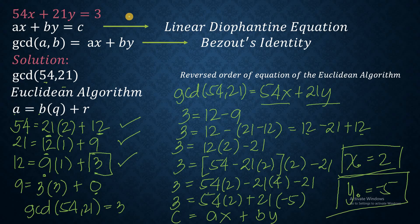So if you treat this as a linear Diophantine equation, and you look for the GCD of a and b, which is 54 and 21, applying Euclidean algorithm to arrive at that GCD, and then utilizing the Bezout's identity, reversing the order of equation of the Euclidean algorithm, then you now have the solutions for x and y. So if you find this helpful, please don't forget to like and subscribe. I'll see you in the next one. Thank you for watching.